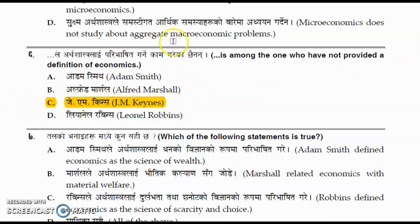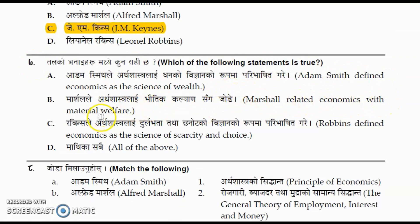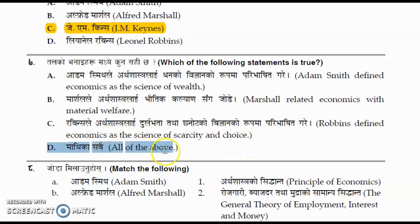Question number seven: which of the following statements is true? Adam Smith defined economics as a science of wealth; Marshall defined it as material welfare; Robbins defined it as a science of scarcity. The correct option is option D — all of them defined economics.